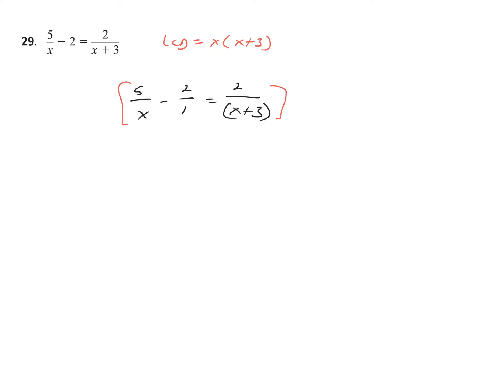Bracket the equation, X times quantity X plus 3 over 1, three distributions. The interesting part on this one — let's do the first distribution mentally. The X's cancel out, leaving me 5 times quantity X plus 3, minus X times quantity X plus 3.